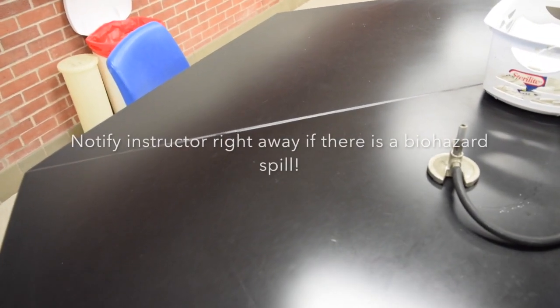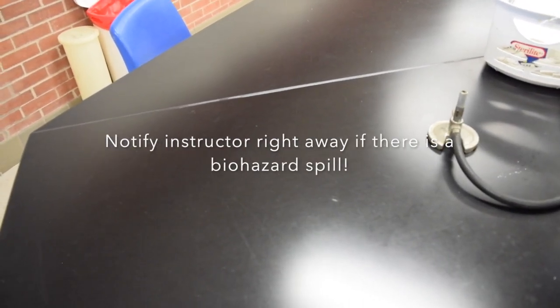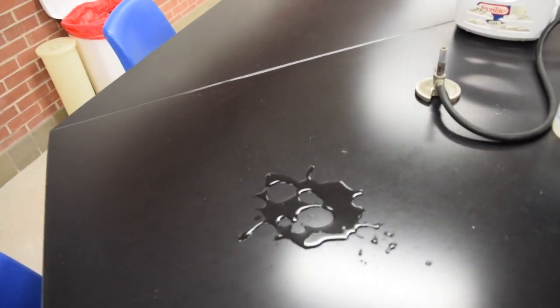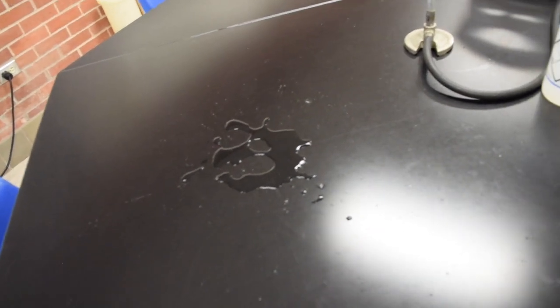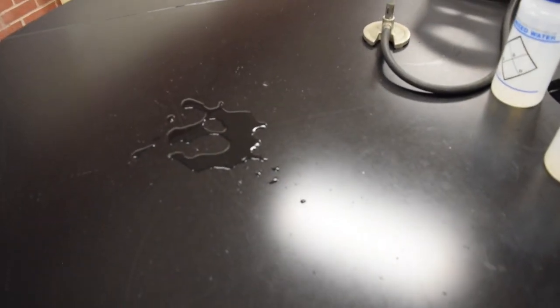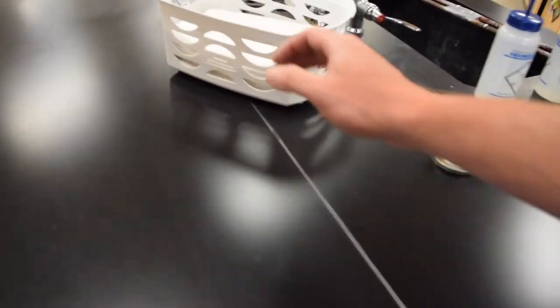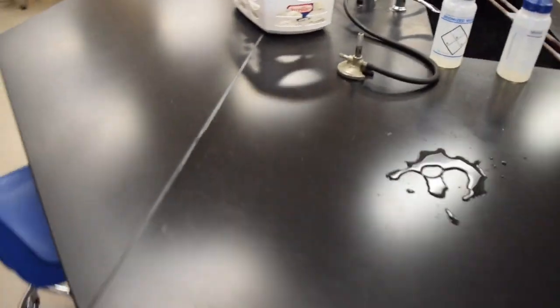Now if there was a biohazard spill, a lot of times people might drop by accident a test tube. Here we have some bacteria that was spilled. That bacteria splatters, usually I've had it shoot five, six feet onto the floor. The reason why we have our safety glasses and lab coats is so you don't get sprayed.